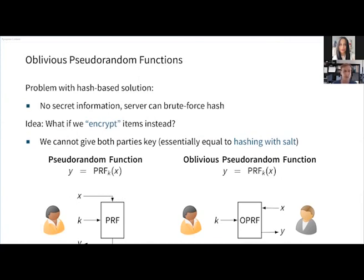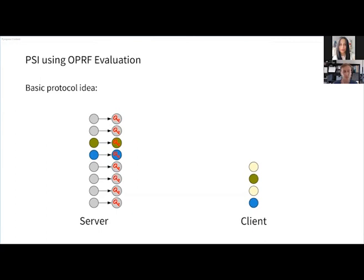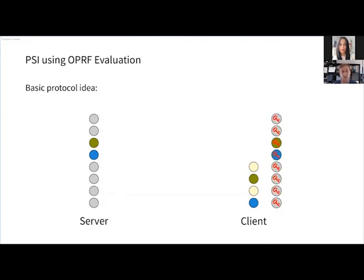So how can we build a private set intersection protocol using oblivious pseudorandom functions? Here we have the basic protocol idea: we have some server set of items and some client set of items, and as in our contact discovery use case, the client set is much smaller. They share two common contacts — the green one and the blue one. The server picks a random secret key and encrypts all of his items using the standard PRF construction. Since this is now essentially random if you don't know the key, he can send a representation of this encrypted set to the client.